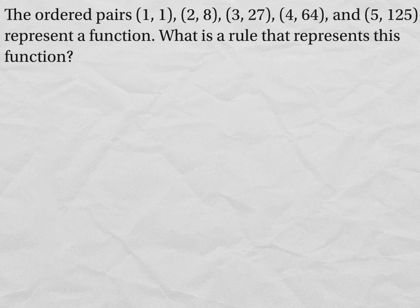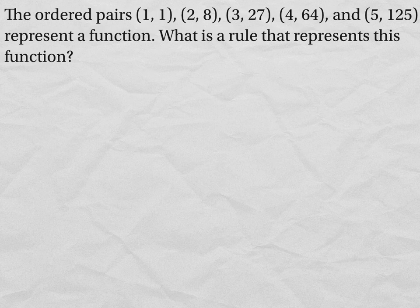The last example says the ordered pairs (1, 1), (2, 8), (3, 27), (4, 64), and (5, 125) represent a function. What is a rule that represents this function?